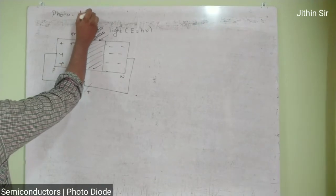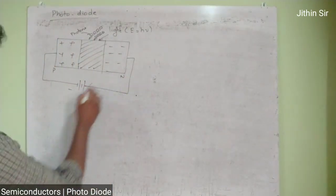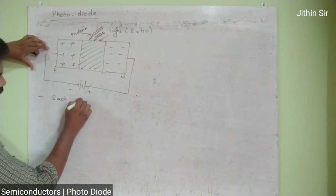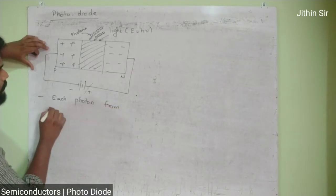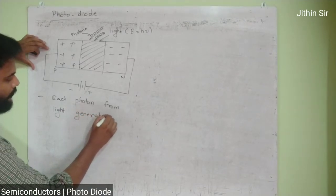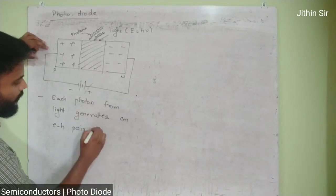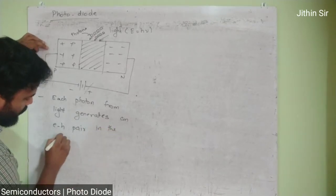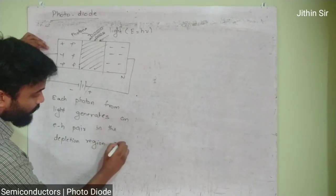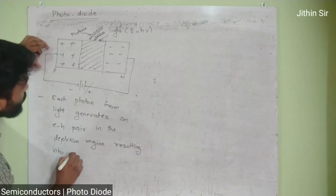Photo diode کا working یہ ہے: a photon from light generates an electron-hole (EH) pair in the depletion region, resulting in flow of current۔